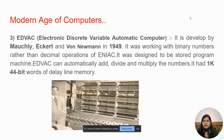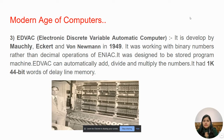The next machine is EDVAC, which stands for Electronic Discrete Variable Automatic Computer. This was made by Mauchly, Eckert, and Von Neumann in 1949. This machine worked on binary numbers rather than decimal operations.